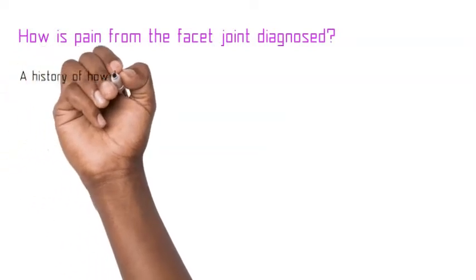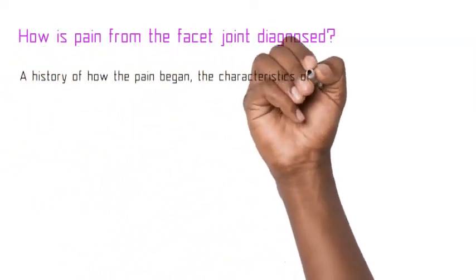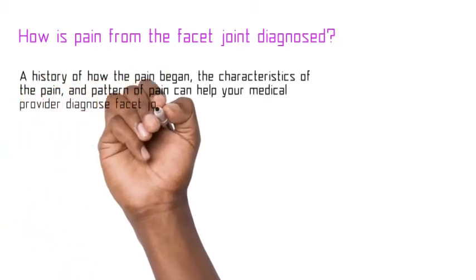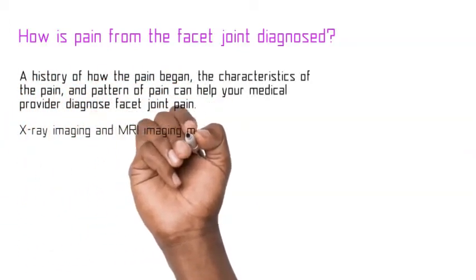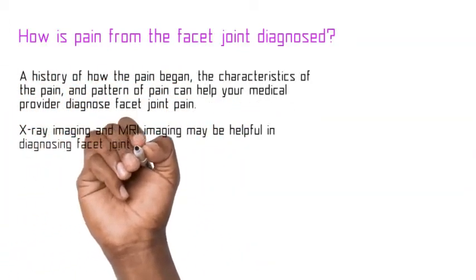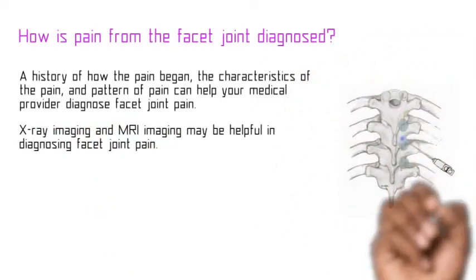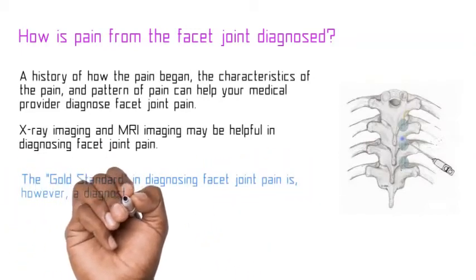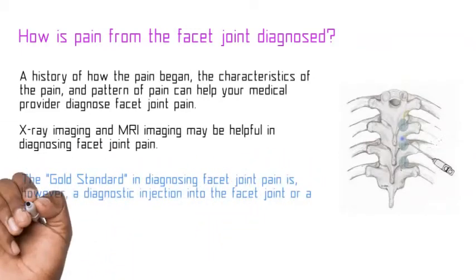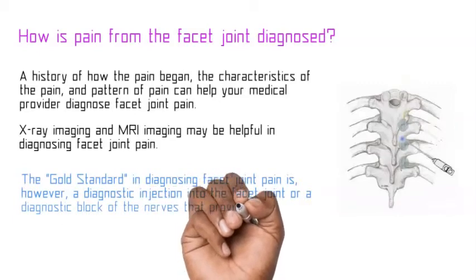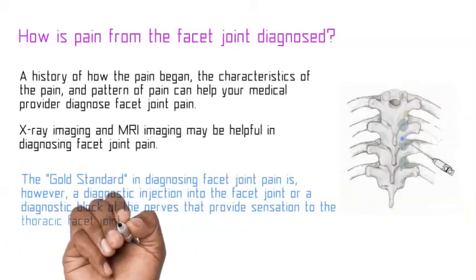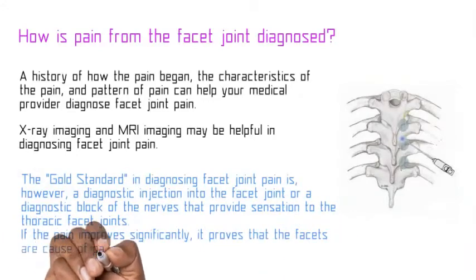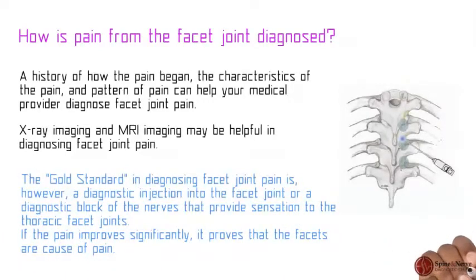How is pain from the facet joint diagnosed? A history of how the pain began, the characteristics of the pain, and the pattern of pain can help your medical provider diagnose facet joint pain. X-ray imaging and MRI imaging may be helpful in diagnosing facet joint pain. The gold standard in diagnosing facet joint pain is, however, a diagnostic injection into the facet joint or a diagnostic block of the nerves that provide sensation to the thoracic facet joints. If the pain improves significantly, it proves the facets are the cause of pain.